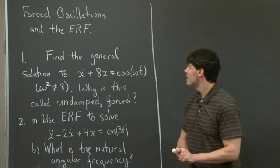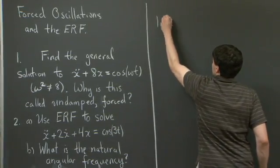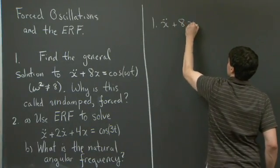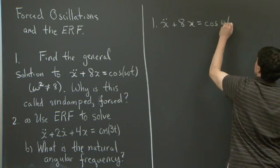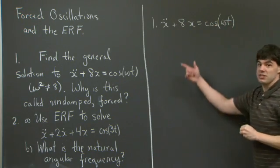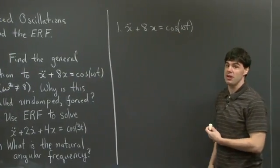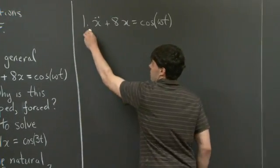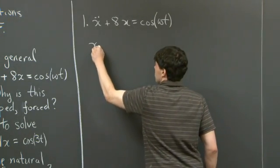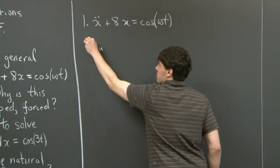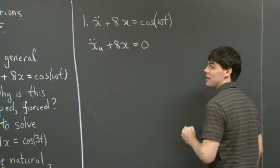Hi everyone, welcome back. We're asked to find the general solution to the differential equation x'' + 8x = cos(ωt). Notice how this is a differential equation with constant coefficients, being forced by a periodic function on the right-hand side. The first thing to do is to write down the homogeneous solution, which solves the differential equation with the right-hand side equal to zero.